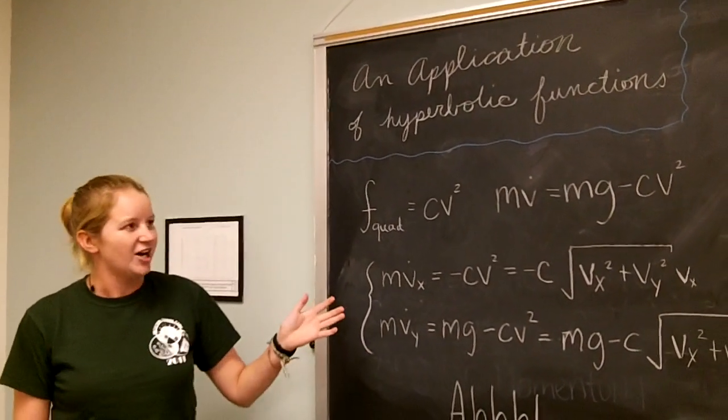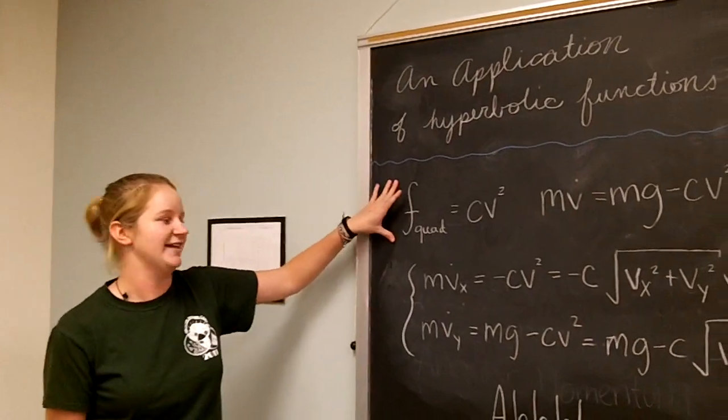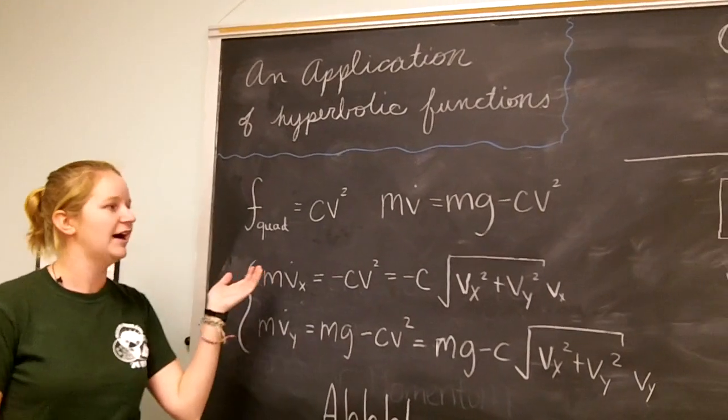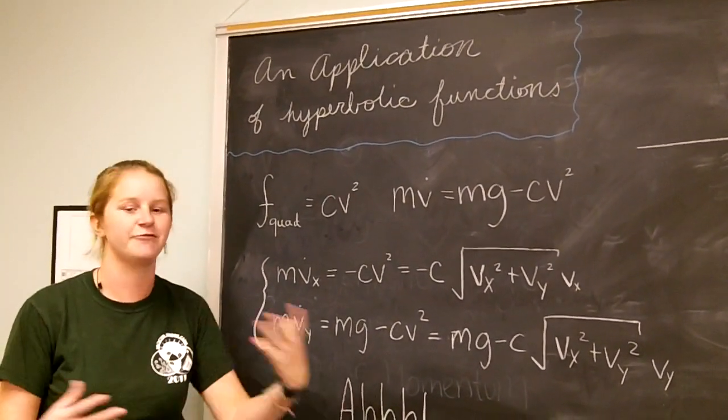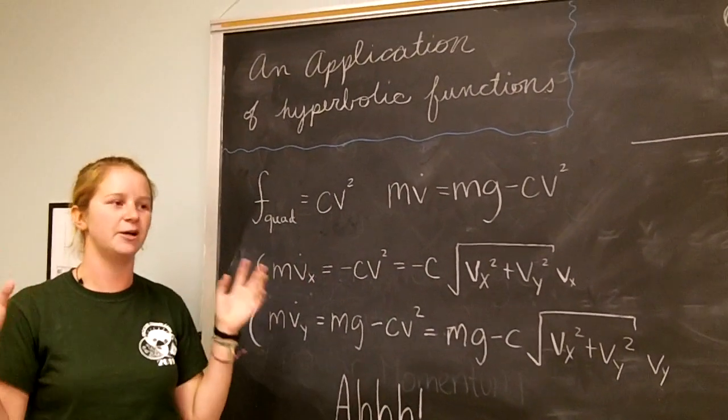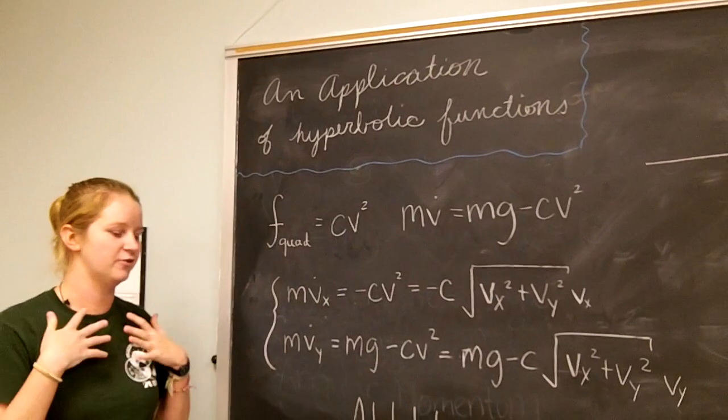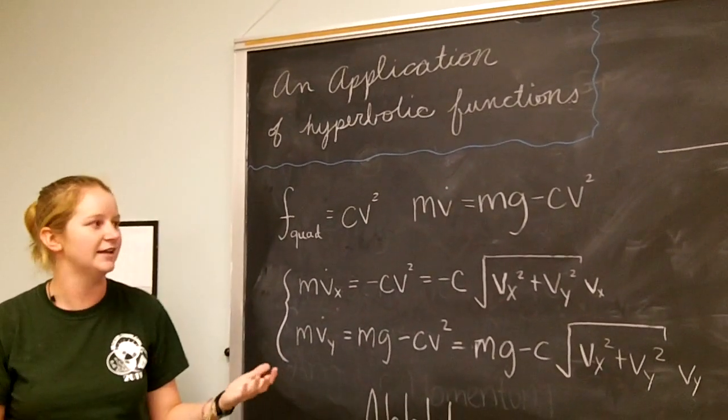So what I'm going to talk about is quadratic drag. The quadratic drag force has the form Cv squared, where C is just some constant. And this applies whenever you have things moving through air, like free fall, things moving relatively quickly, where what's more important is not the physical pressure of molecules on whatever's moving, but instead is the turbulence.